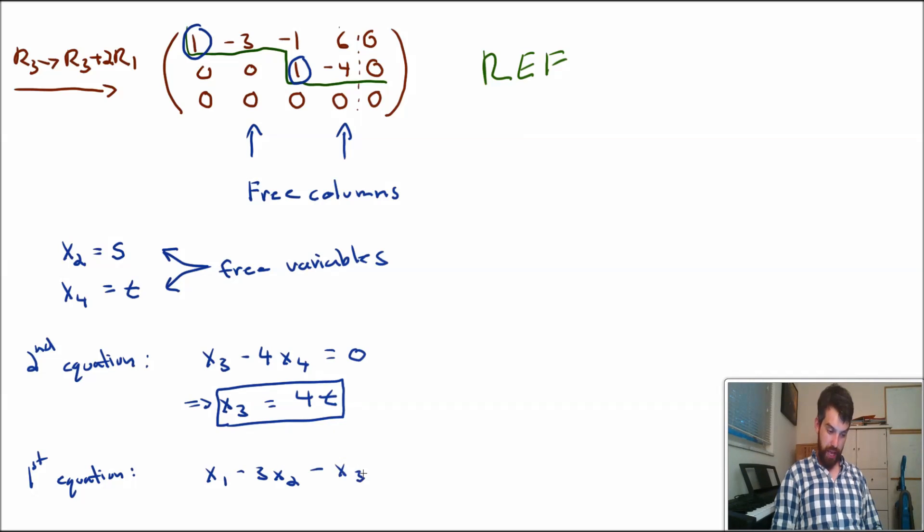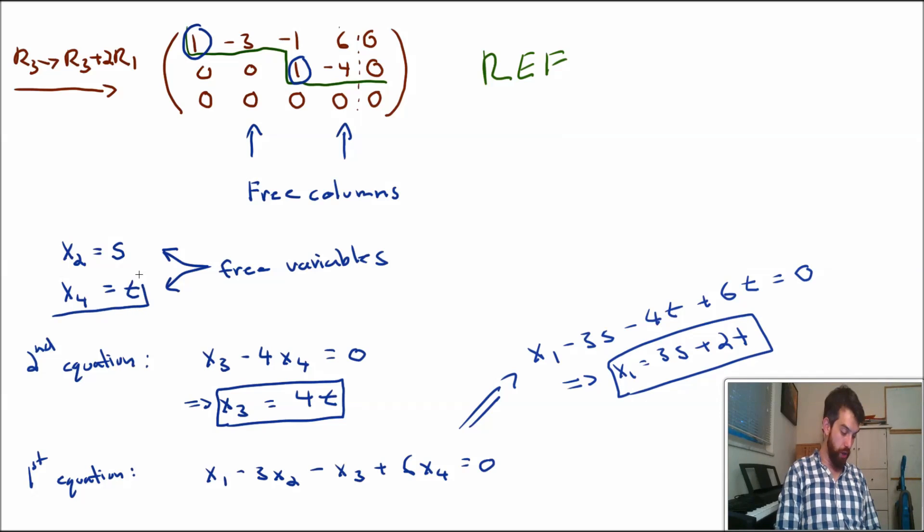And then if I look off the first equation, what I'm going to get here is that x1 minus 3x2 minus x3 plus 6x4 is equal to 0. That's what reading off of that first equation is going to give me. And then I can come from here, and I can substitute a few things in. So okay, my x2 is just an s. So x1 minus 3s. And then I have an x3, but x3 we know is 4t. And then plus 6, and x4 is also just t. So that is what I've done. I've translated everything but x1 into s's and t's. And I can manipulate it even one step further and say my x1 is equal to 3 times s minus 4t plus 6t is 2t. So plus 2t.